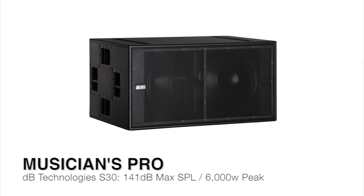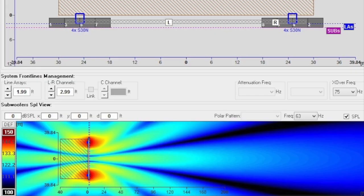Those subs are DB Technologies S30s. They have 141 dB max SPL, and they are 3,000-watt RMS, 6,000-watt peak on each speaker. So the SPL plot below is based on those volumes. And obviously, you can see on the left-hand side graph that we're up to 150 dB with that system at max SPL.